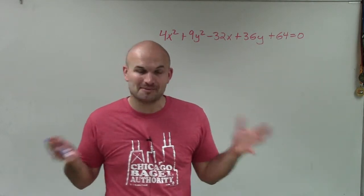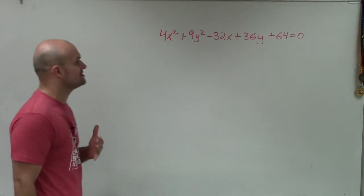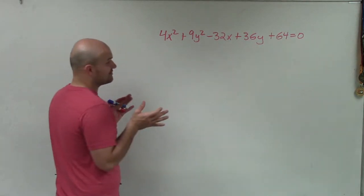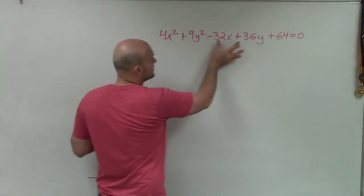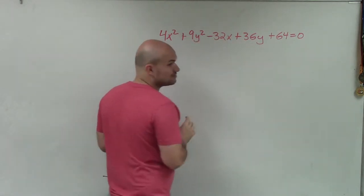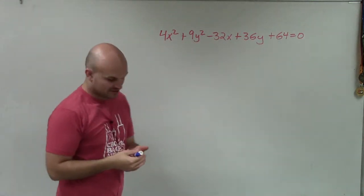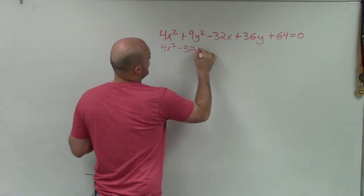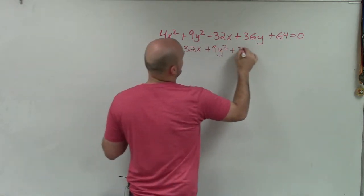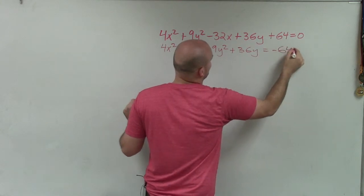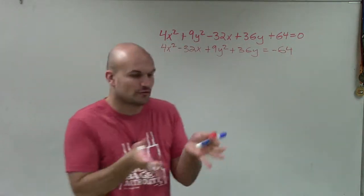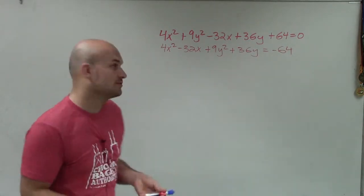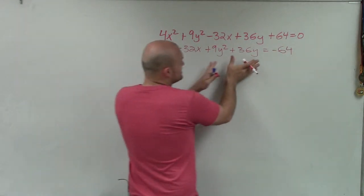To do that, we have to apply the process of completing the square. I'm going to have to complete the square twice. First, I'll rearrange so my x's and y's are grouped together, and get the 64 on the other side. So I have 4x² - 32x + 9y² + 36y = -64. Now I have enough to complete the square separately for the x's and separately for the y's.